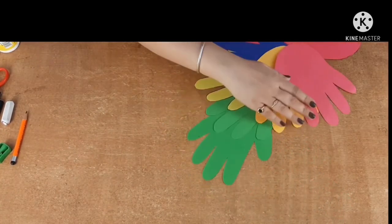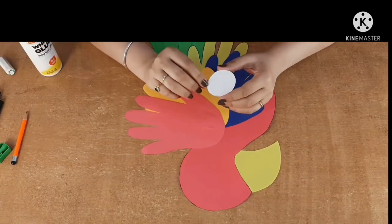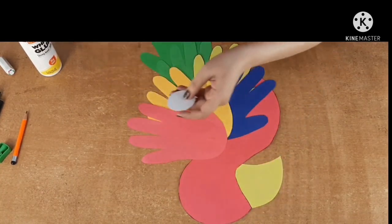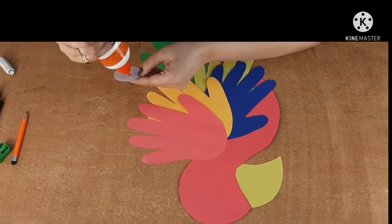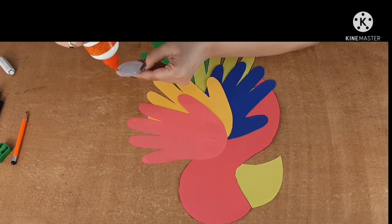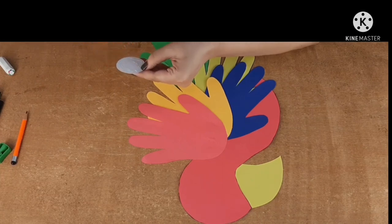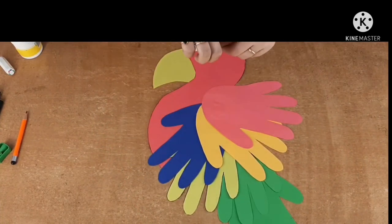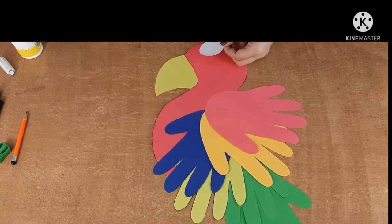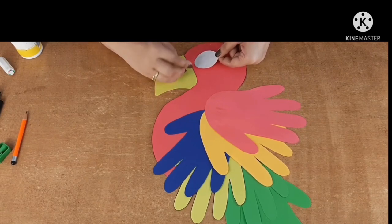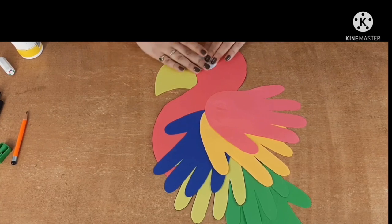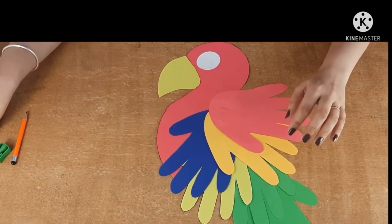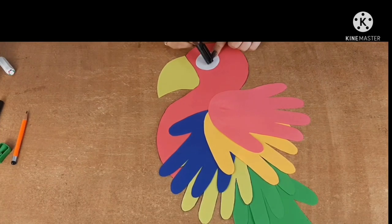Now we'll cut the eyes. I've cut a round circle here, which is the eye of the parrot, of the macaw. We'll stick it here. Now what we'll do is we'll outline the eye and color this portion black.